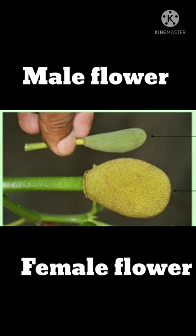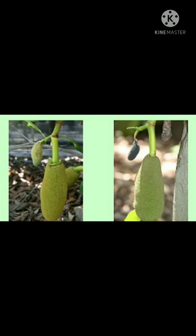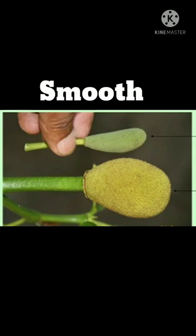According to the fruit skin: when the fruit skin is smooth, it is a male flower. When the fruit surface is rough, it is a female flower.